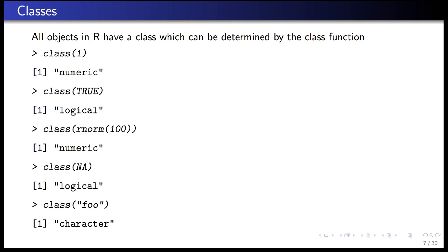Every R object has a class, and you can determine it with the class() function. For example, the number 1 is numeric by default — even though it looks like an integer, without the capital L suffix, R assumes it's a real number. The logical TRUE is of class logical. Random normal variables are numeric. NA by default is logical, but you can also have character, numeric, or integer NA through coercion. The character string 'foo' is of class character.